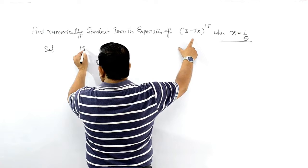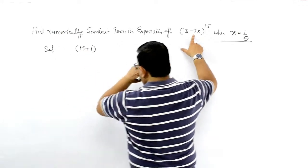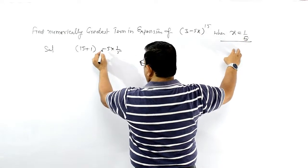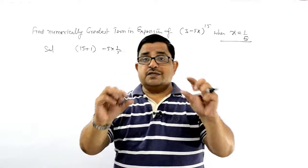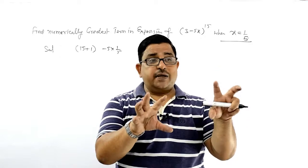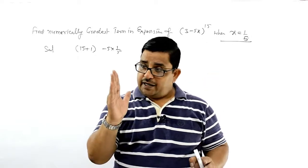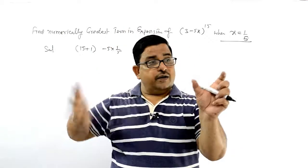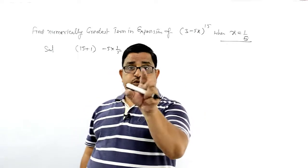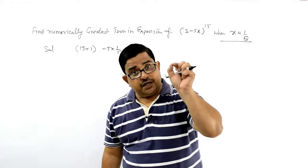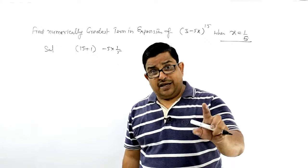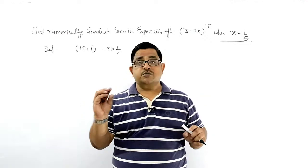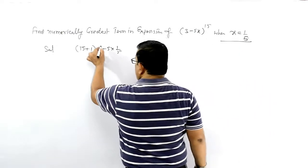Solution लेते हैं: पहले निकालेंगे (n+1), जो 15+1 हो गया, mod a by mod x plus mod a। देखें minus 5 into a की value — x की value 1/5 है। हमारे standard notation में x वाली जगह x को रखेंगे, a वाली जगह a को लिखेंगे। a की values में जो decide हो रही है वो हमेशा ध्यान रखें। इसका mod हो जाएगा।